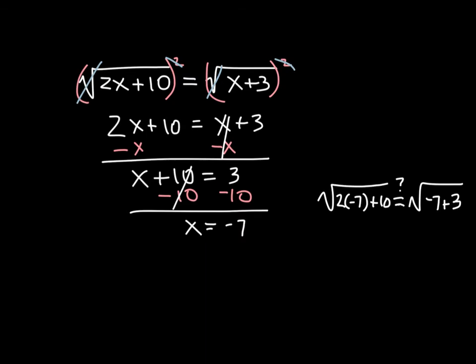So, first of all, we have 2 times negative 7, which is negative 14, plus 10. So we have negative 14 plus 10. And you might be seeing an issue here already, I hope you are. And on this side we have negative 7 plus 3, which is negative 4. And right away, right there, we know that this is not going to be a solution.